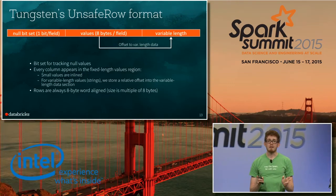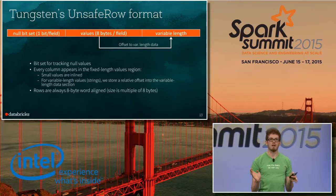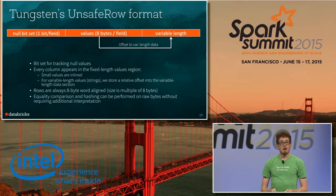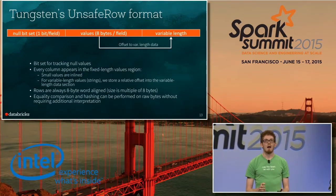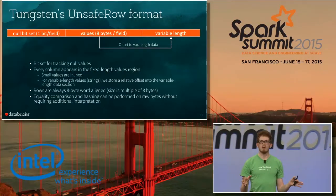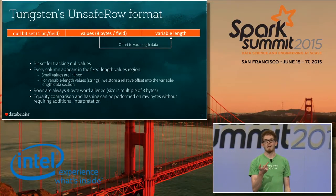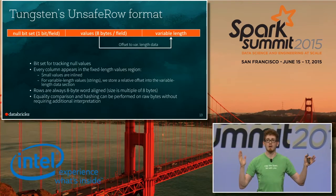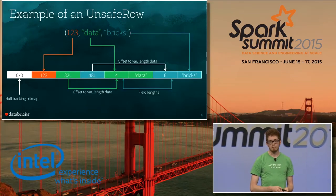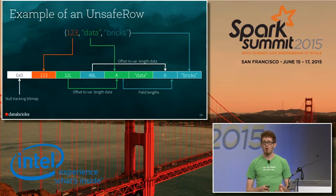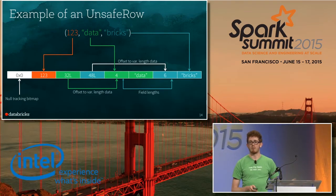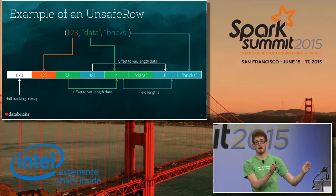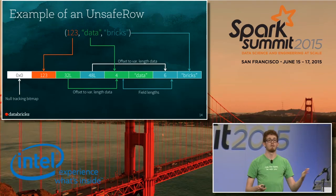Here's that same tuple in the UnsafeRow format. I have my null-tracking bitmap, which here is empty because all fields are present. I have my small values like 1, 2, 3 inline, and then relative offsets to the variable-length data for the two string fields.